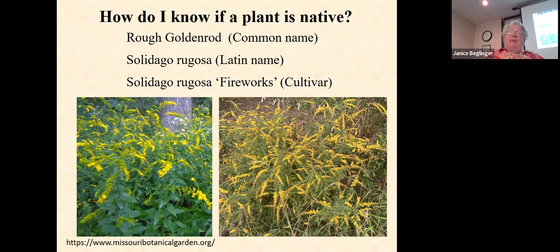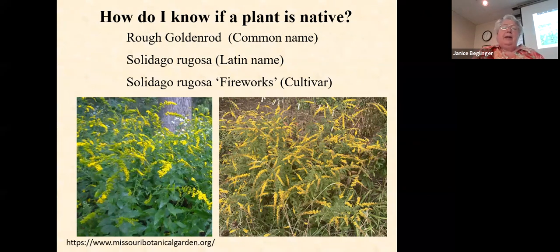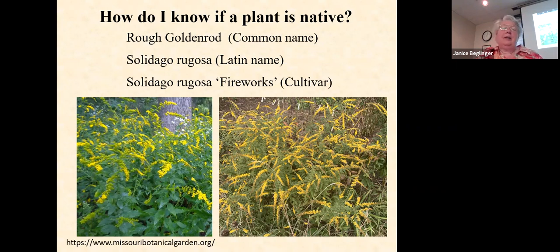So how do you know if a plant's native when you go to the nursery? You want to know the Latin name. All plants have a common name — for example, rough goldenrod is the common name, and the Latin name is Solidago rugosa. That's the genus and the species. If you go into the garden center looking for Solidago rugosa, you're probably going to find 'Fireworks,' which is a cultivar. What you're mostly going to find in most garden centers are cultivars of native plants. But you want at least the Latin name so you have somewhere to start.